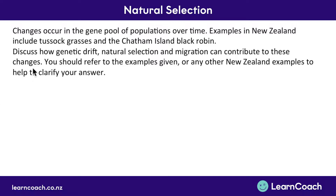Here's a question: changes occur in the gene pool of populations over time. Examples in New Zealand include tussock grasses and the Chatham Island black robin. We need to discuss how genetic drift, natural selection, and migration can contribute to these changes, referring in our answers to the examples given or any other New Zealand examples.